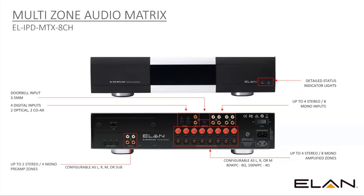Each of the outputs can be configured as a left, a right, or a mono. We also have preamp outputs — four individual or two pairs — and each one can be set as a left, a right, a mono, or a sub. When creating or defining your zones, you can have one, two, or more of these preamp outputs combined with speaker outputs.